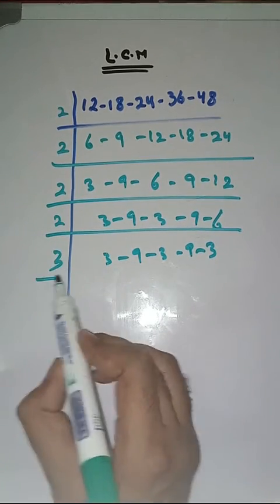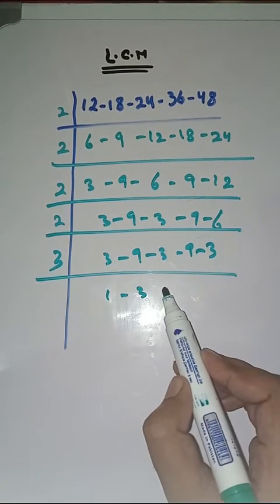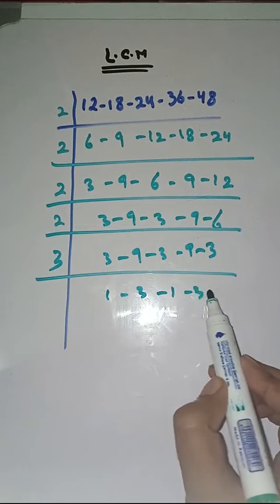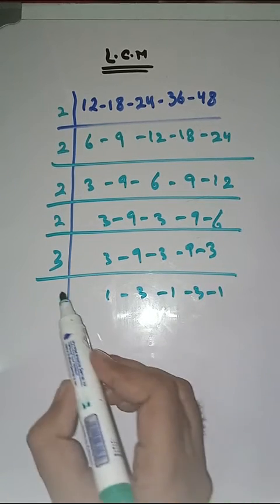Now with 3. 3 1s are 3, 3 3s are 9, 3 1s are 3, 3 3s are 9, 3 1s are 3.